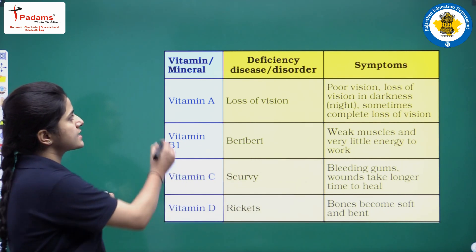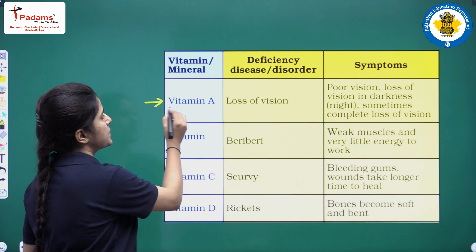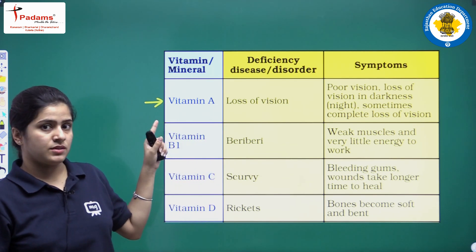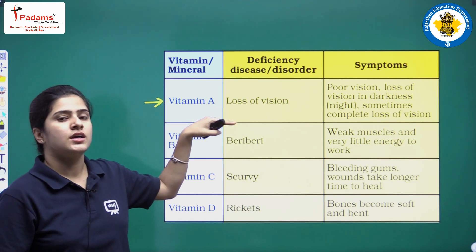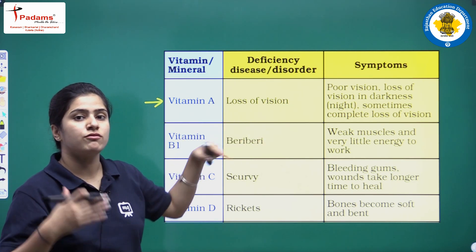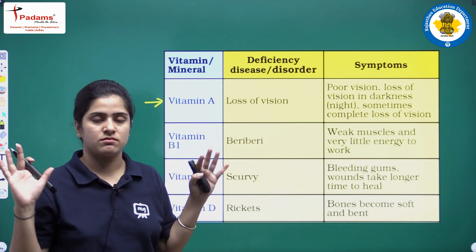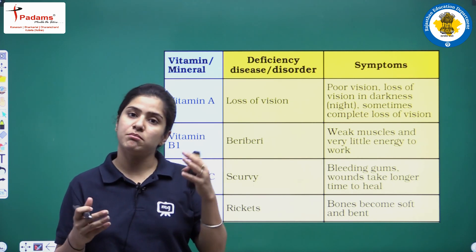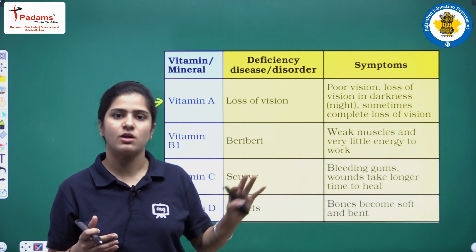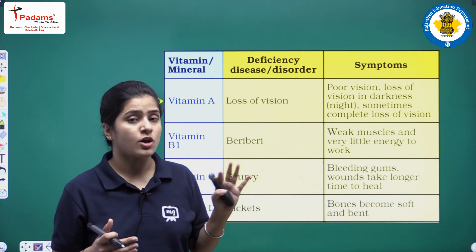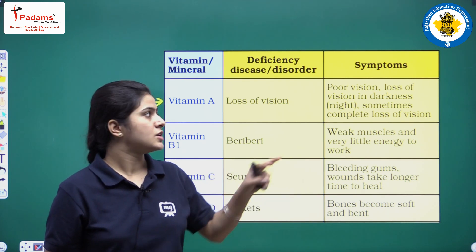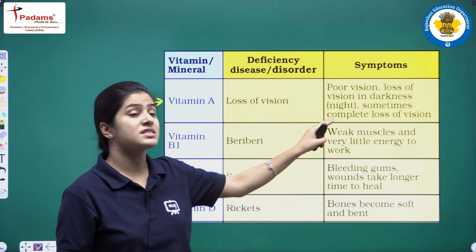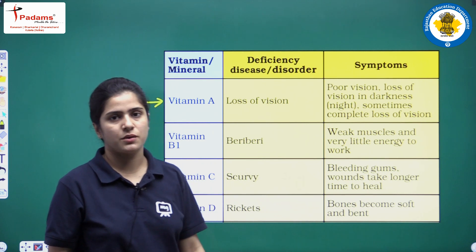First, vitamin A. Because of the deficiency of vitamin A, we will have loss of vision — we will not be able to see in the dark. So the symptoms are poor vision, loss of vision in darkness, and sometimes complete loss of vision.